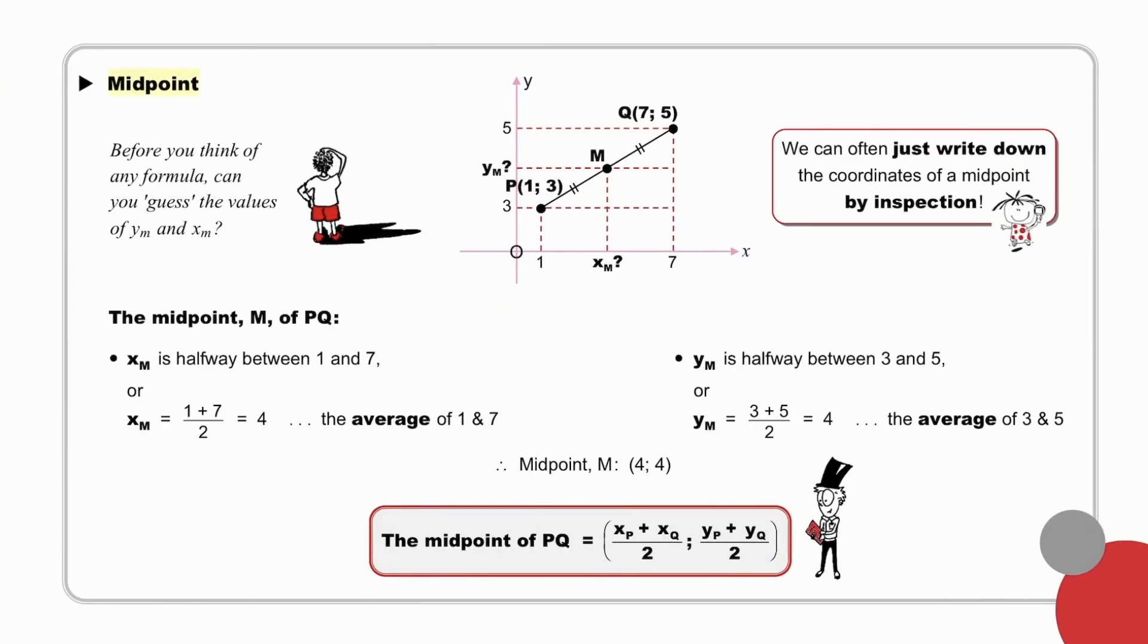And finally, the midpoint formula. Consider point M, and we need to determine the values of the Y coordinate of M and the X coordinate of M. Before you think of any formula, can you guess the values of y_M and x_M? Pause while you do so. You probably just wrote down the coordinates of midpoint M by inspection: (4, 4). Halfway between 1 and 7, halfway between 3 and 5.